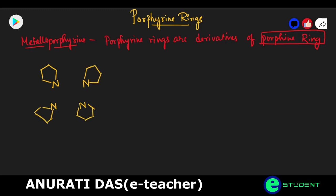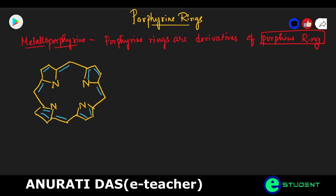In the structure we can see four pyrrole rings, and these four pyrrole rings are connected with a methylene unit. This is our whole ring structure. We have conjugation — conjugated double bonds shown in a different color. This is our conjugated system. The hydrogens marked in green color are at the beta positions — these are the beta hydrogens.